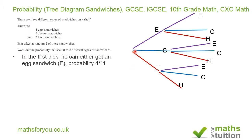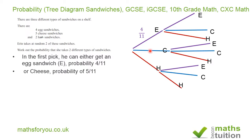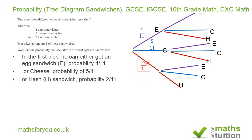On the first pick, I could pick an egg sandwich with a probability of 4 over 11, or a cheese sandwich with a probability of 5 over 11, or a hash sandwich with a probability of 2 over 11. That completes the first event.